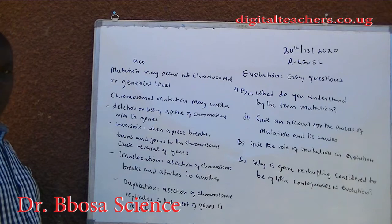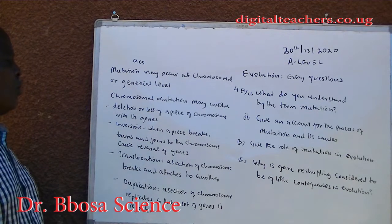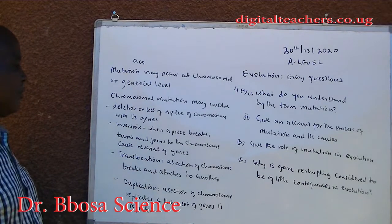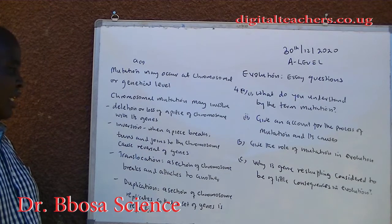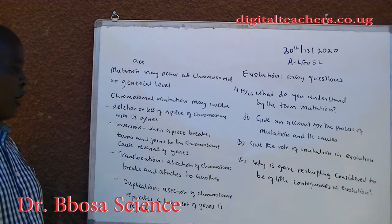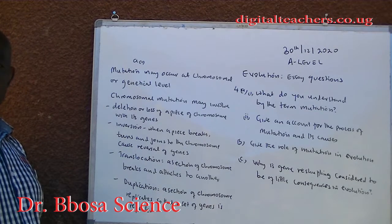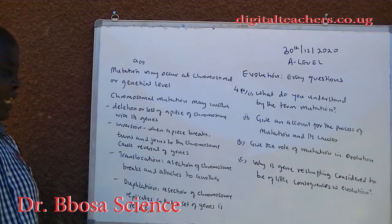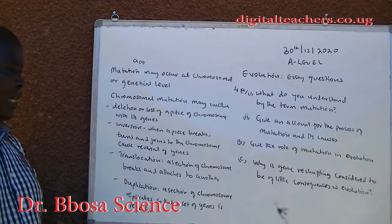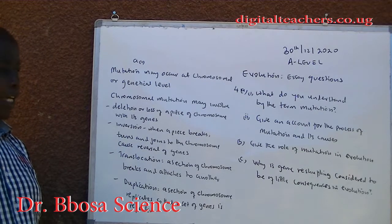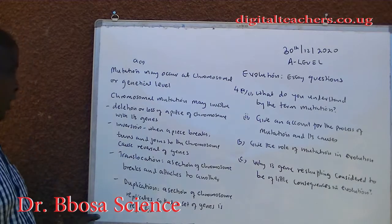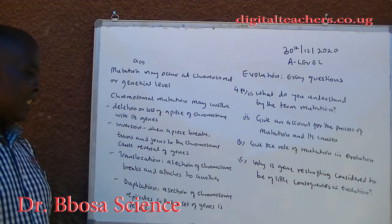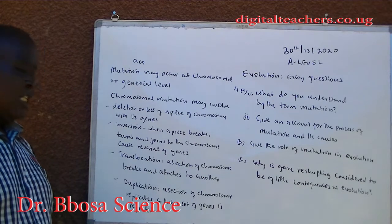Chromosome mutation may include: deletion, or loss of a piece of a chromosome with its genes; inversion, when a piece breaks, turns and rejoins the chromosome causing reversal of genes; translocation, where a section of chromosome breaks and attaches to another chromosome; and duplication, where a section of chromosome replicates so that a set of genes is repeated.